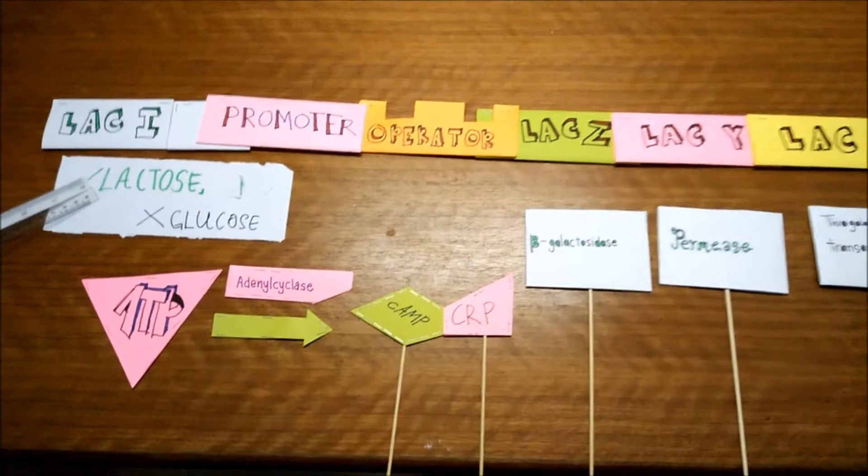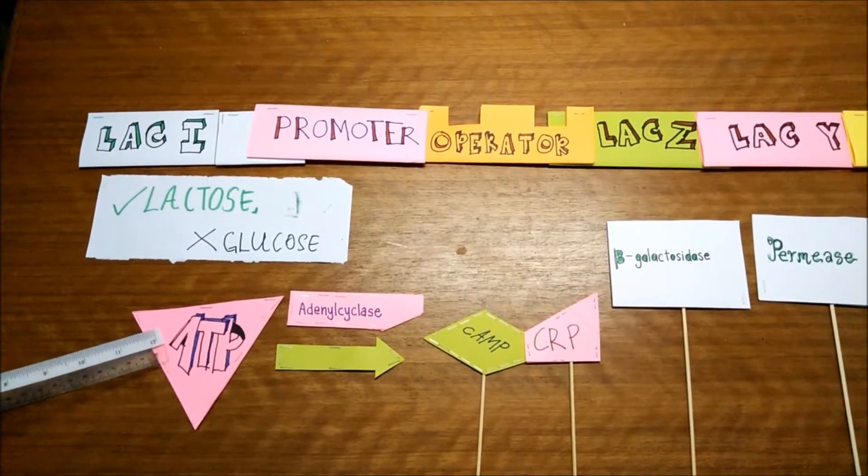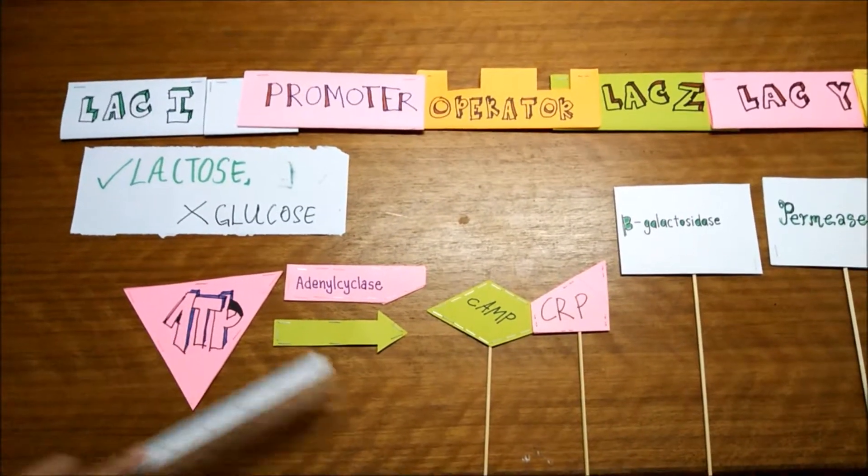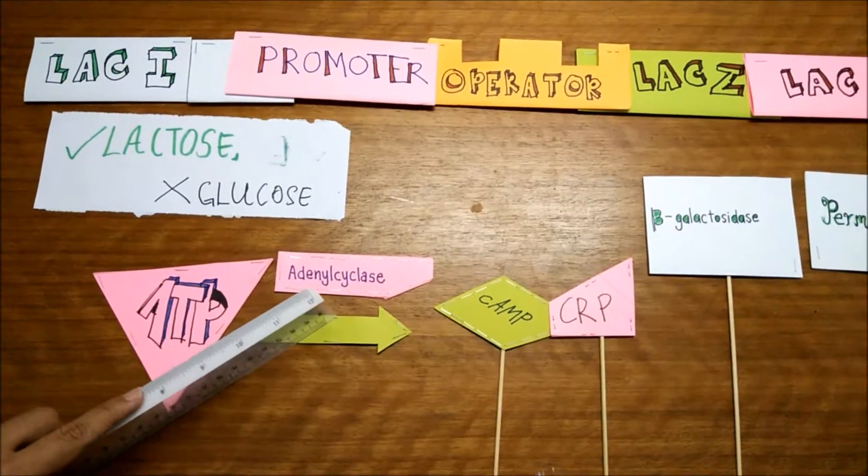But lactose is a complex sugar, so it needs ATP to break down the lactose. So ATP will break down to cAMP, which is catalyzed by adenyl cyclase.